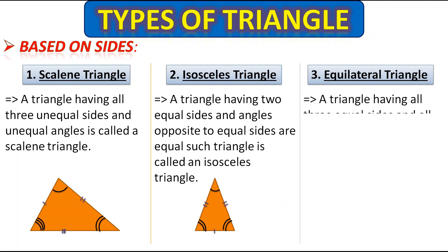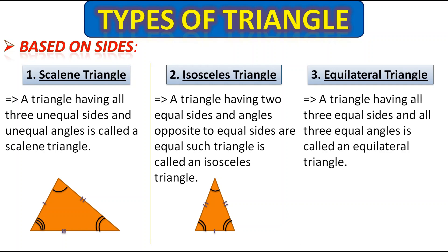Next comes the equilateral triangle. A triangle having all three equal sides and all three equal angles is called an equilateral triangle. Here this is an equilateral triangle — it has all three sides equal and all three angles equal.